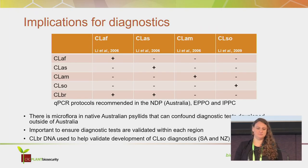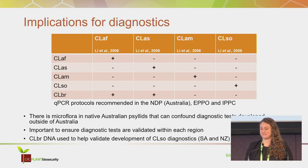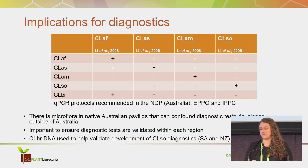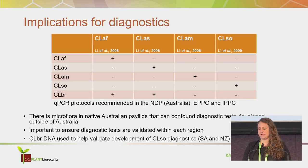We wanted to check whether brunswickensis makes any implications for diagnostics. I ran some of the primary diagnostic screening tests for those exotic disease-causing Liberibacters that we're worried about. Brunswickensis did generate a false positive for two tests — one for Africanus and one for Asiaticus. This confirmed our original concern that there is microflora in native Australian psyllids that can confound diagnostic tests developed outside of Australia.